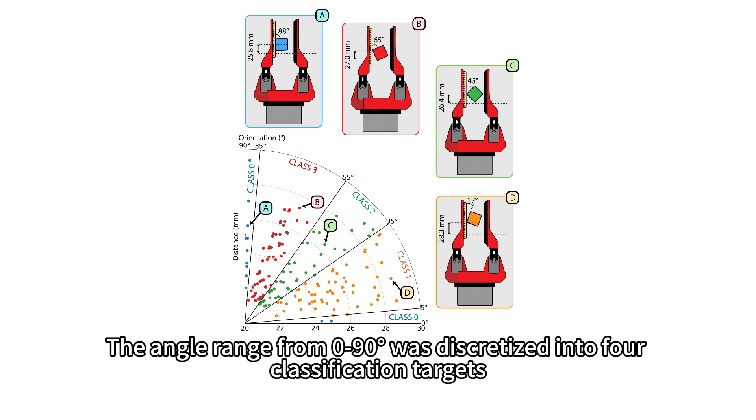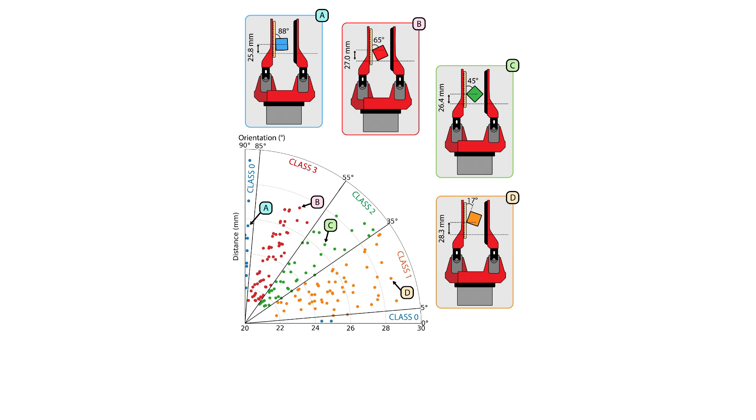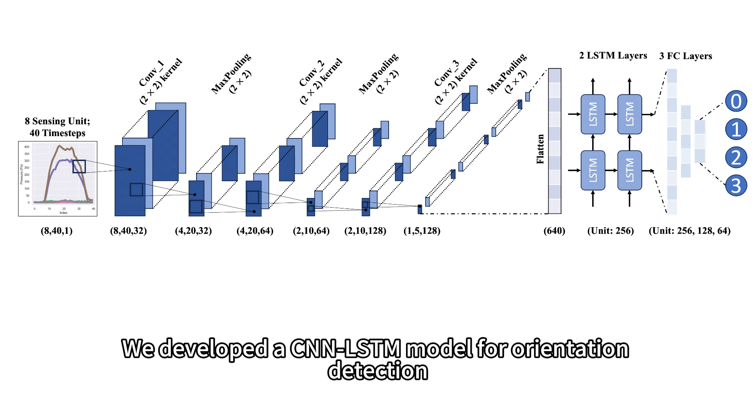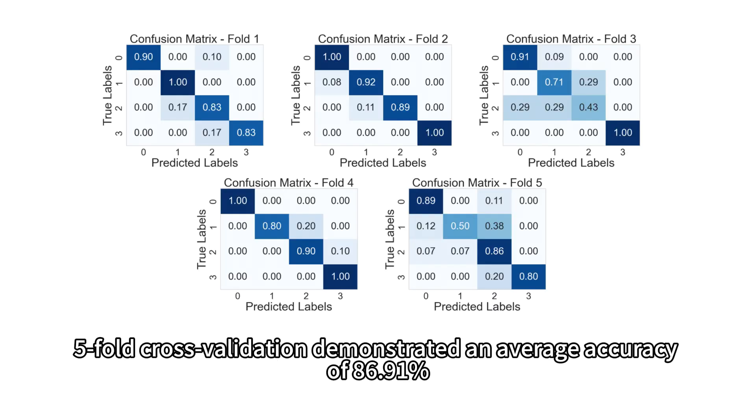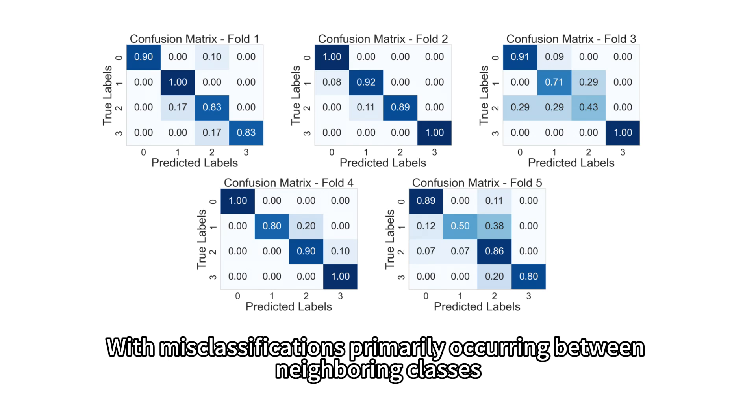The angle range from 0 to 90 degrees was discretized into four classification targets. We developed a CNN-LSTM model for orientation detection, capturing spatial and temporal correlations in squeezing interaction signals. Five-fold cross-validation demonstrated an average accuracy of 86.91%, with misclassifications primarily occurring between neighboring classes.